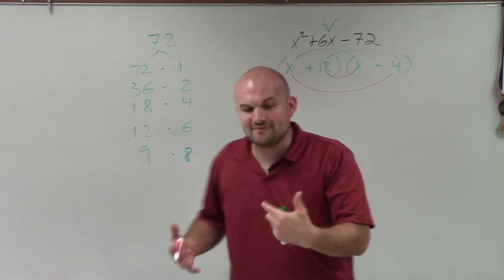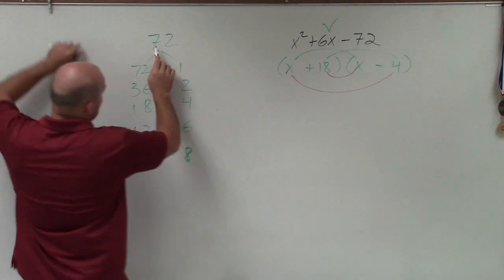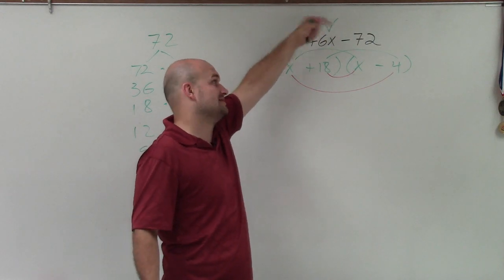So basically, when we're trying to find 6x, what we're really doing is saying, all right, we know the factors are going to multiply to give me 72. But which of my factors, when I add them, are going to give me positive 6x?